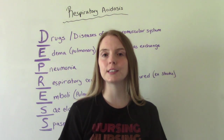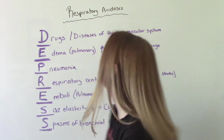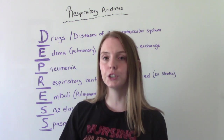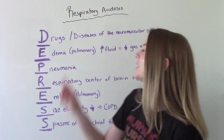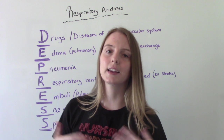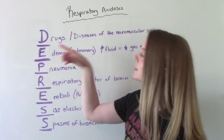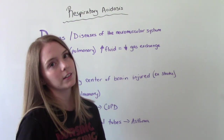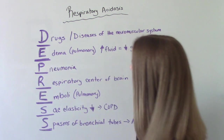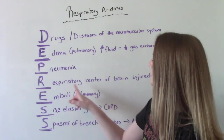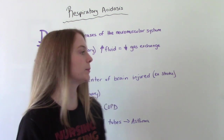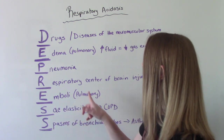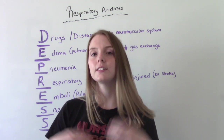A memory tool to help remember the causes of respiratory acidosis is DEPRESS — like depressed respirations. D stands for drugs, so over-sedation with sedatives or narcotics. There's another D for diseases of the neuromuscular system, which can impair a person's ability to breathe. E is for edema — specifically pulmonary edema — where too much fluid in the lungs impairs gas exchange, causing decreased respirations. P is for pneumonia. R means the respiratory center of the brain has been injured, maybe due to a stroke, throwing off your breathing. And E is for emboli — specifically a pulmonary embolus, a blood clot that's traveled to the lungs and can impair your breathing.